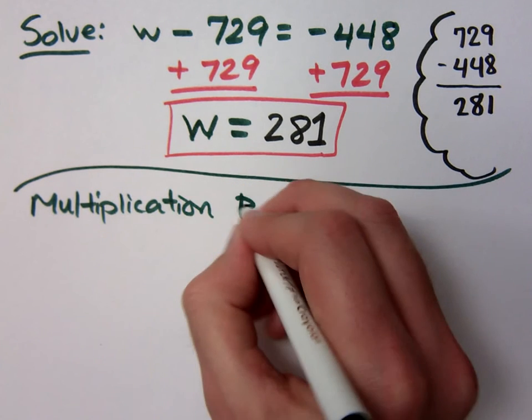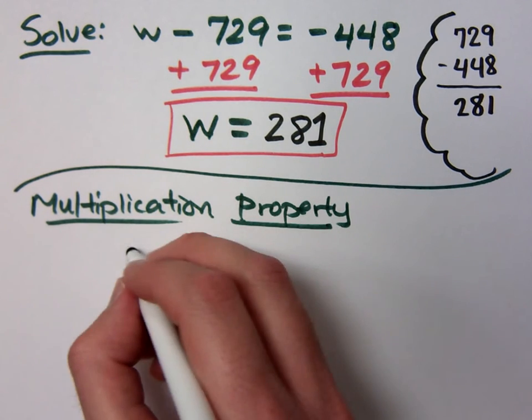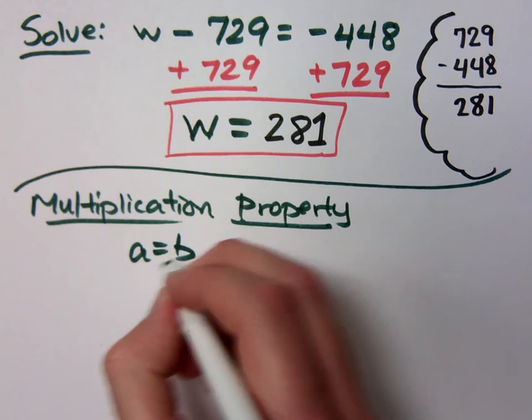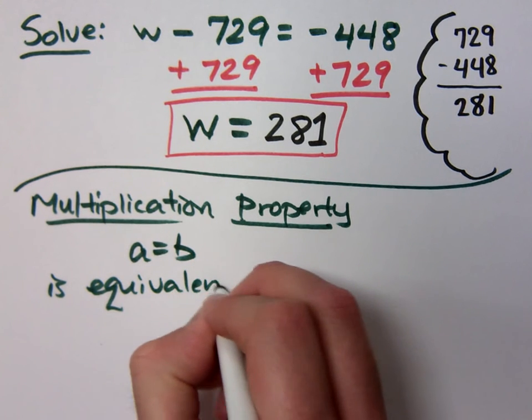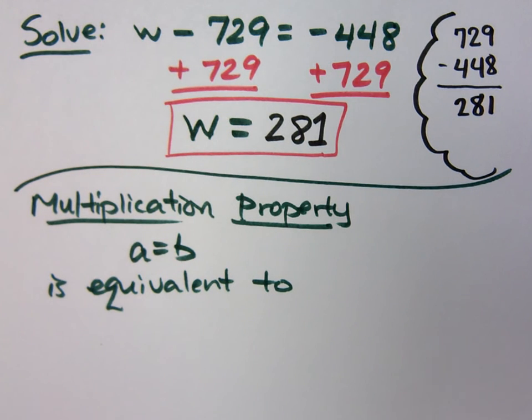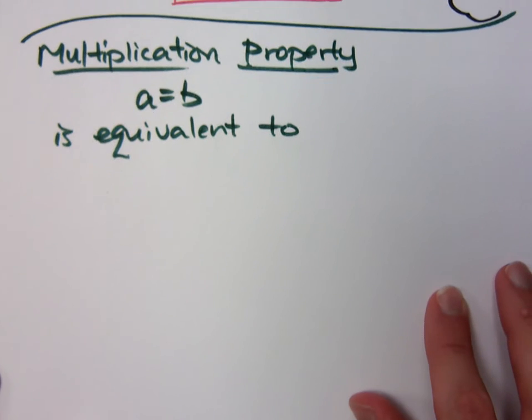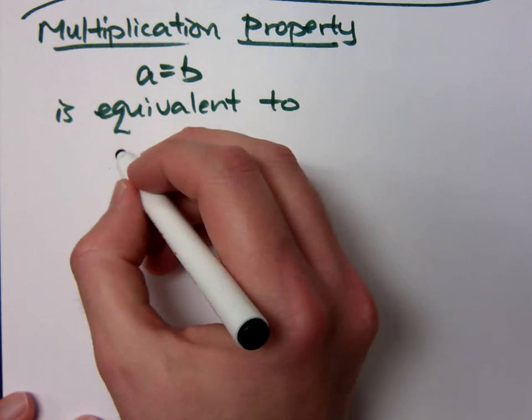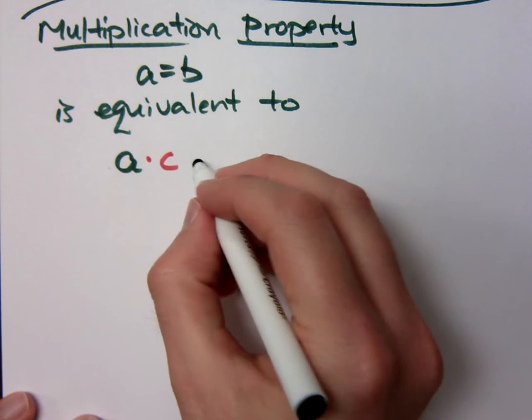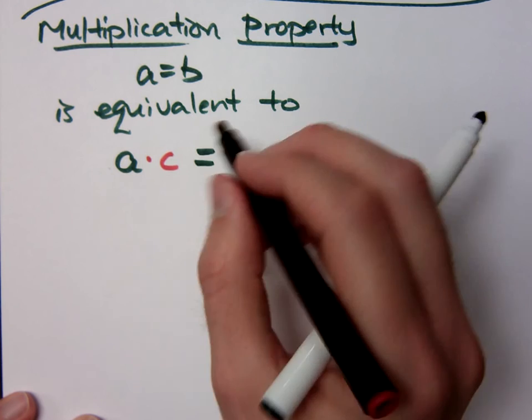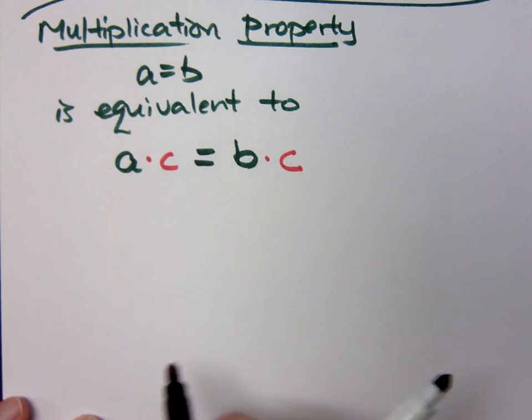Let's take a look at the multiplication property. This guy is very similar to the addition property that we just talked about. And it's just another set of equivalent equations. So A equals B is equivalent to the following: it's equivalent to A times C equals B times C.